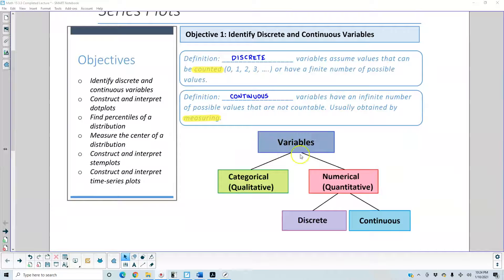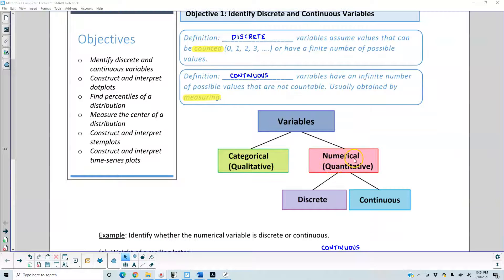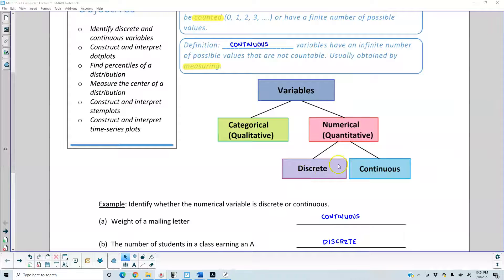We talked about variables previously, and the variables are either categorical or numerical, or qualitative or quantitative. And then under the numerical category, we either have discrete or continuous.